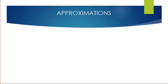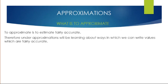What does the term approximate mean? The term approximate means to estimate fairly accurately. In mathematics, under this topic, we'll be learning about ways in which we can write values which are fairly accurate. For example, if we had a value of 3.789 meters and were required to approximate it, it would be approximated to 3.8 meters or 4 meters, depending on the degree of accuracy we've been told to reach.